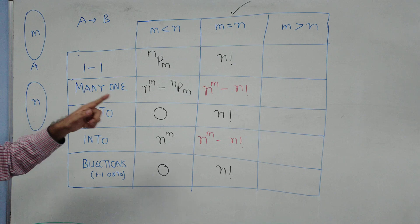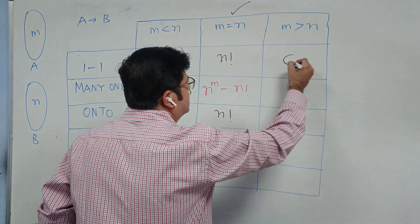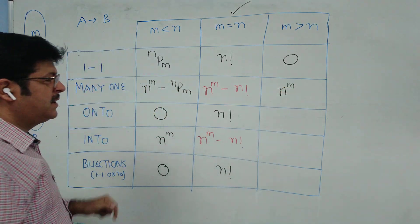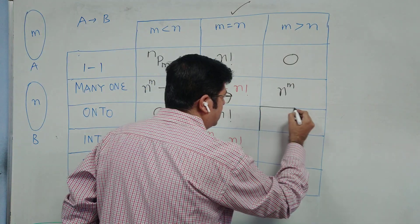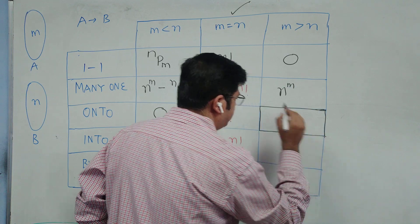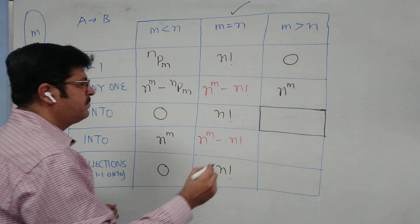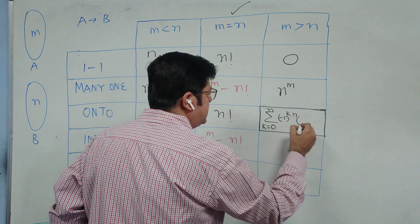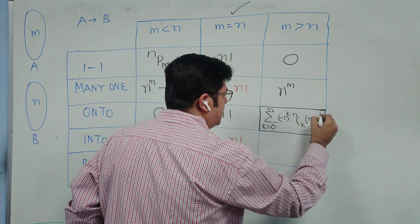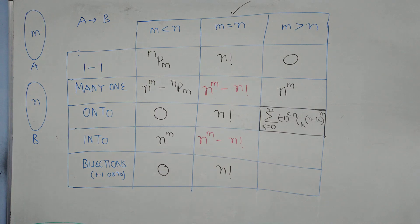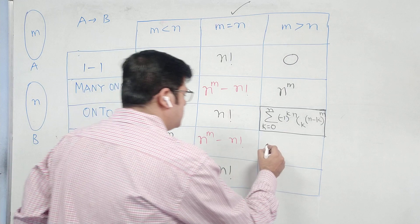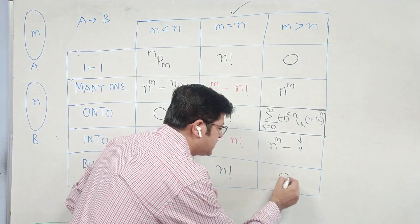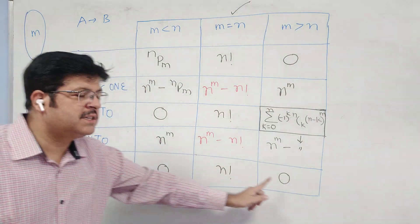When M is greater than N, one-one functions are not possible — that is zero. All functions are many-one. The onto (surjection) formula is for competitive exams: summation of k running from 0 to N, of (-1)^k times nCk times (N minus k)^M. This is not required for your board exam. Into functions equal total functions minus the onto count. There are no bijections when M is not equal to N.